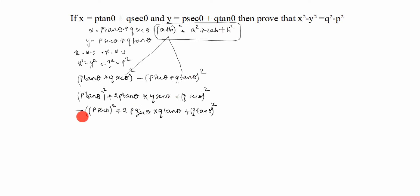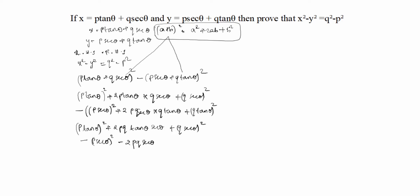After removing the bracket from the subtracted term, the expression becomes: p²·tan²θ + 2pq·tan θ·sec θ + q²·sec²θ minus p²·sec²θ minus 2pq·sec θ·tan θ minus q²·tan²θ. The middle terms (2pq·tan θ·sec θ) cancel out.